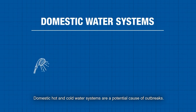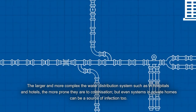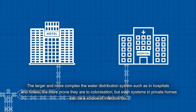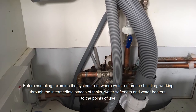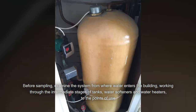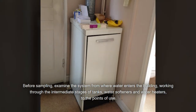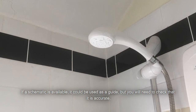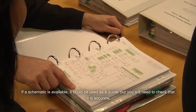Domestic hot and cold water systems are a potential cause of outbreaks. The larger and more complex the water distribution system, such as in hospitals and hotels, the more prone they are to colonisation. But even systems in private homes can be a source of infection too. Before sampling, examine the system from where water enters the building, working through the intermediate stages of tanks, water softeners and water heaters to the points of use. If a schematic is available, it could be used as a guide, but you will need to check that it is accurate.